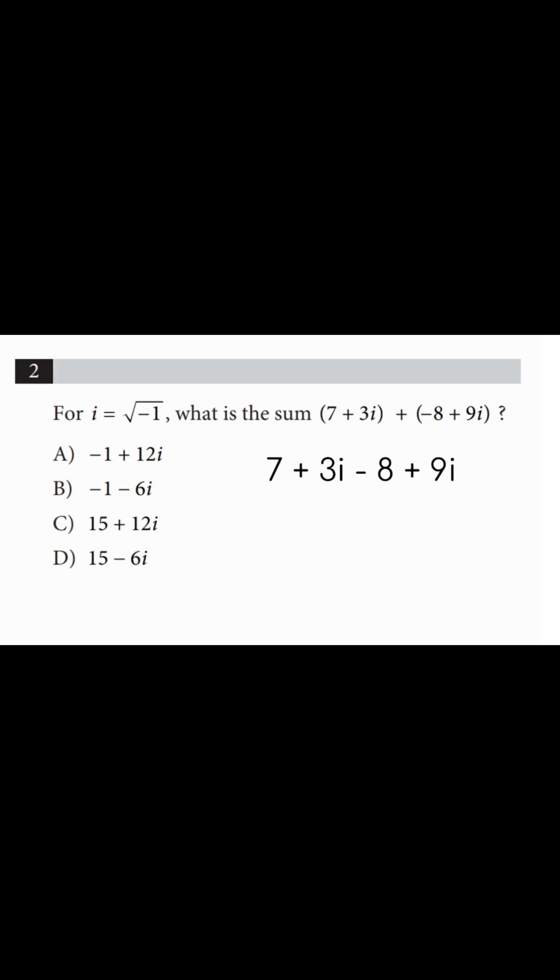7 plus 3i minus 8 plus 9i. Here, you just collect like terms. 7 minus 8 is negative 1, and 3i plus 9i is 12i.